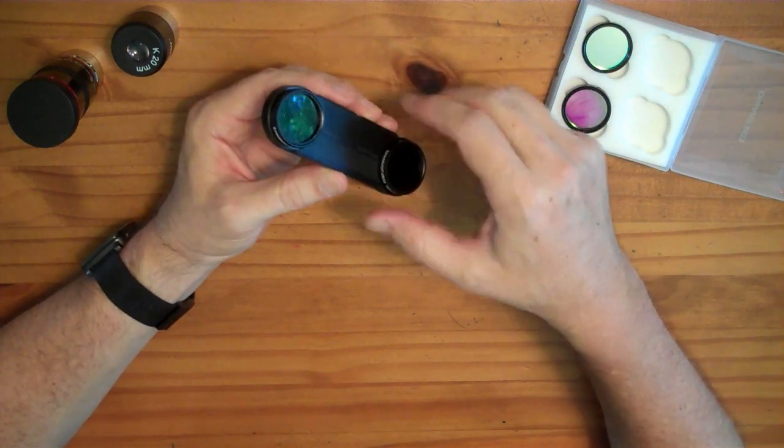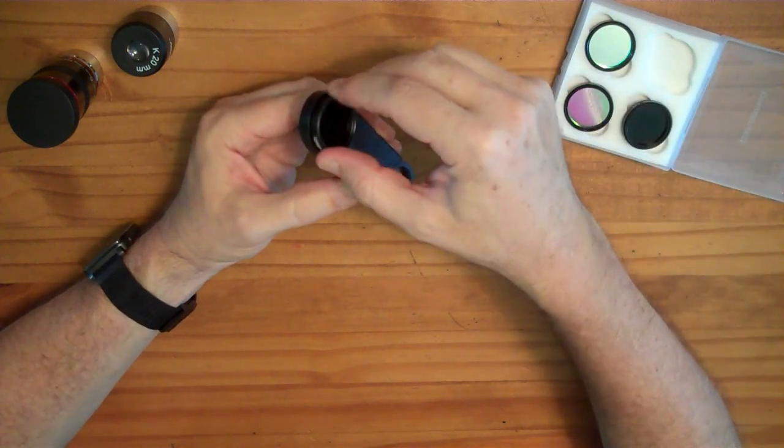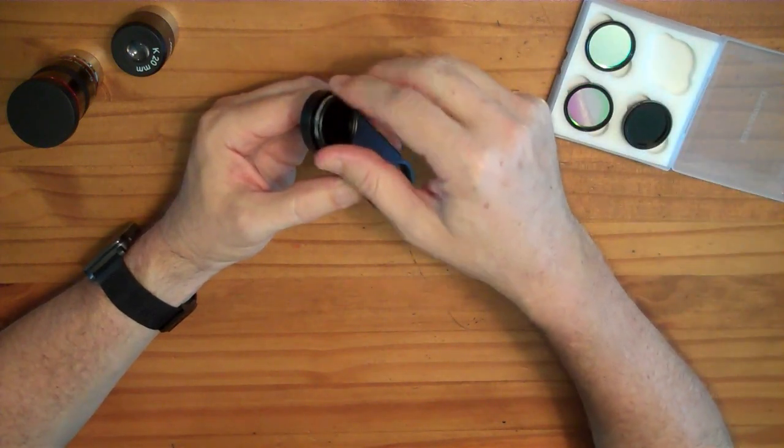So these filters are standard 1.25 inch filters. They're typically used inside of telescope eyepieces.